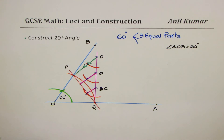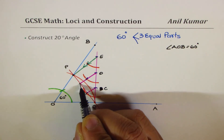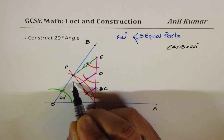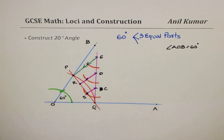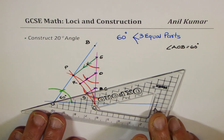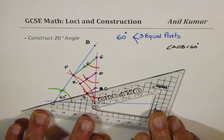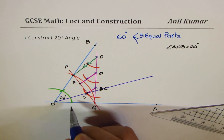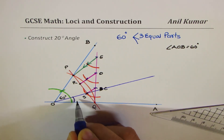Mark the points on arc PQ wherever the parallel lines intersect it — those points are R and S. Since we need 20 degrees, we connect O with S, which gives one third of 60 degrees. The angle we get is 20 degrees.